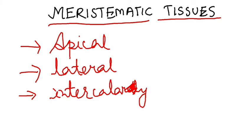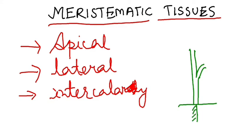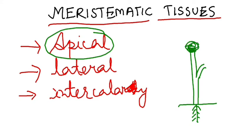Let me draw a plant here so that you understand. The apical meristem is present in those sections which give the plant its length — it will be present at the top and at the root tip, because these two are responsible for the length of the plant.